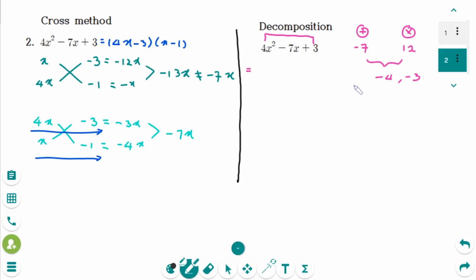So the middle term breaks into these two terms. So 4x squared minus 4x minus 3x plus 3.